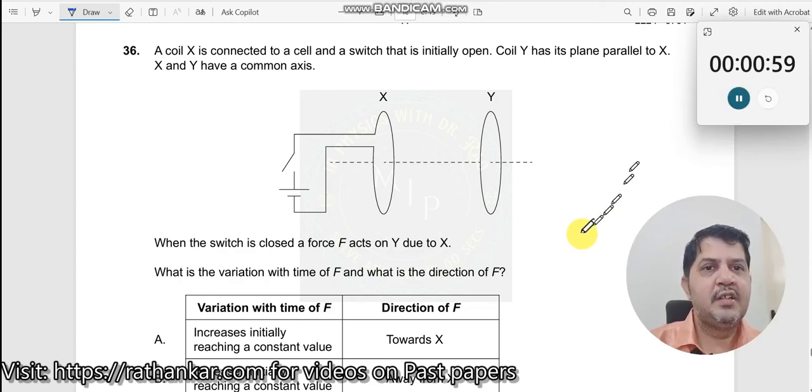Question number 36. The coil is connected to a cell and a switch that is initially open. Coil Y is parallel to X. Y is parallel to X. X and Y have a common axis, means concentric coils.